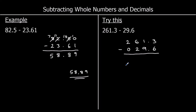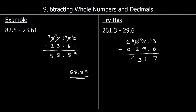So I'm going to steal one from the ones, and that's going to be worth 10 in the tenths. So 13 take away 6 is 7. The decimal point stays where it is. In the ones, I've got zero take away 9 — I'm not going to do that. I'm going to steal one from the tens, and that's worth 10 in the ones. So 10 take away 9 is 1. In the tens, 5 take away 2 is 3. And in the hundreds, 2 take away nothing is 2. So my answer is 231.7.